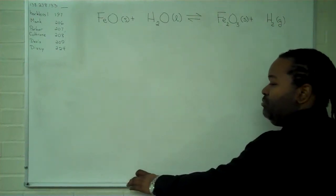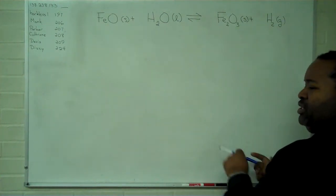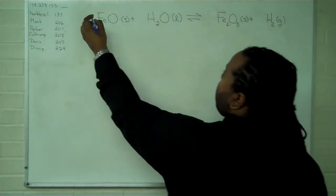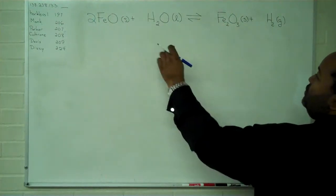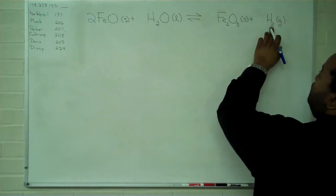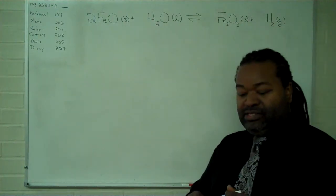To do the first step, balancing, I'll use blue. We're going to need two copies of our iron oxide. This will allow us to have two irons on both sides and three oxygens and two hydrogens. Now that this has been balanced,